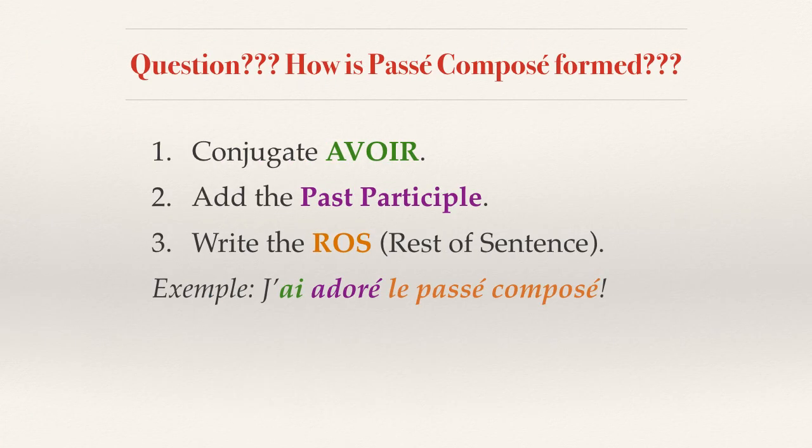How do we form this? First, we'll conjugate avoir. We're going to add the past participle and then we'll add the RAS, or rest of sentence. So in this example: j'ai adoré le passé composé — I loved passé composé.